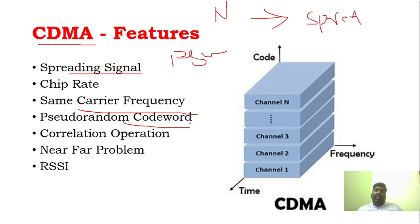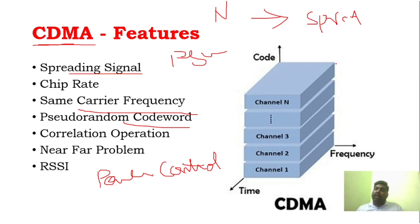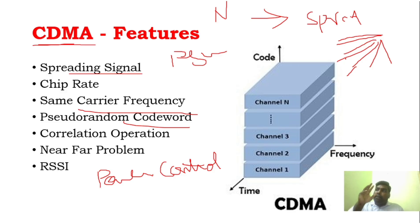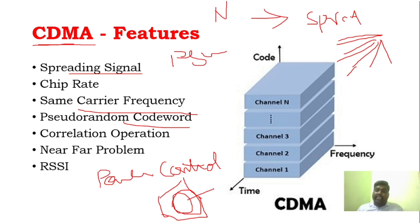A very important drawback is that CDMA can create a near-far problem. Power control is very very important in CDMA. If you have a tower, many users can connect to it at the same time. There should be proper power control for all users. If power control is not managed properly within the cell limits, it will create a near-far problem.